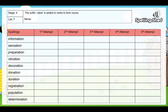So here is your task for today. We've got our spelling list here: information, sensation, preparation, vibration, decoration, donation, duration, registration, population and determination. Remembering that ending — that 'shun' sound — is the T-I-O-N.